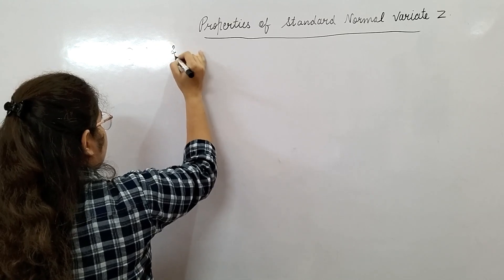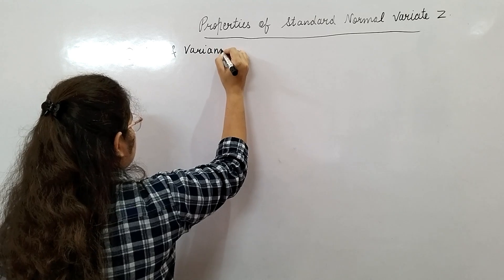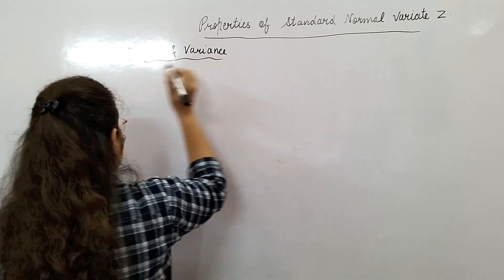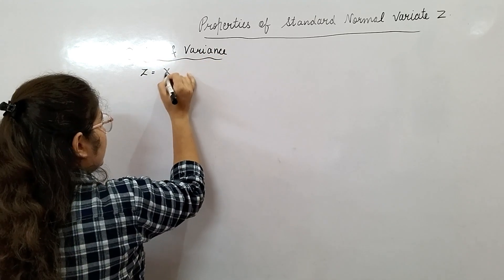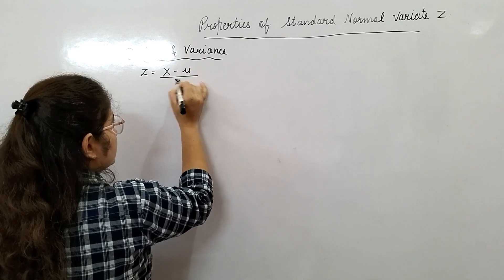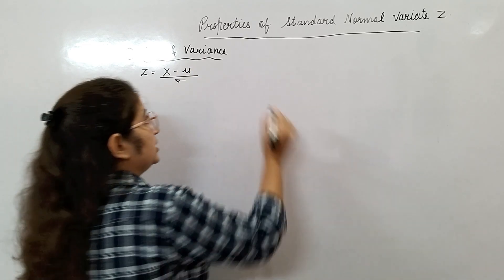Mean and variance. What is Z? Z equals X minus mu by sigma. This is the value of Z.